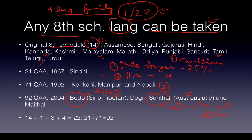Originally there were 14 languages. In the 67th Amendment, Sindhi was added — because Sindhi is spoken in Rajasthan, Gujarat, and also in Ulhas Nagar near Mumbai. Then 3 languages were added by the 71st Amendment Act: Konkani, spoken on the Konkan coast near Goa; Manipuri, spoken in Manipur; and Nepali.